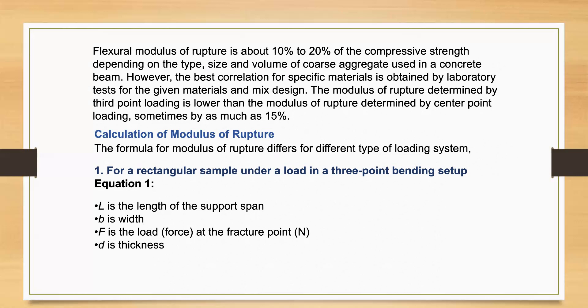For a rectangular sample under a load in three-point bending setup, Equation 1: L is the length of the support span, b is width, F is the load or force at the fracture point, and d is the thickness.